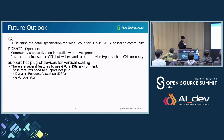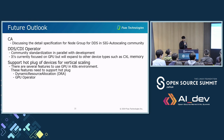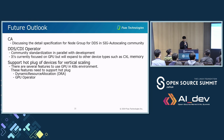Finally, I explain our future outlook. Regarding CA, we need to discuss the detailed specification for node group for vertical steering in the SIG autoscaling community. Regarding DDS and CDI operator, we need to do standardization in parallel with development in the community. Currently, we focus on GPU, but we will expand to other device types such as CXL memory. We also need to realize hot-plug devices for vertical steering. There are several features to use GPU in Kubernetes environments such as DRA (dynamic resource allocation) and GPU operator — these features need to support hot-plug for vertical steering. We are working on hot-plug support for these features.